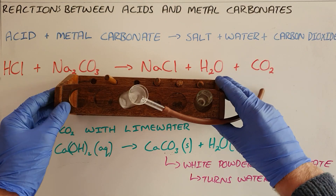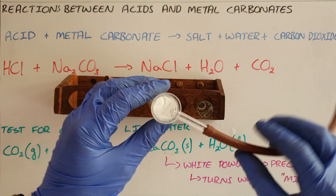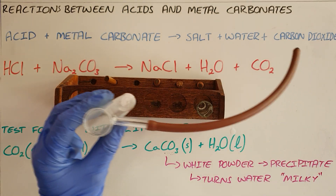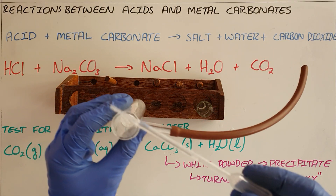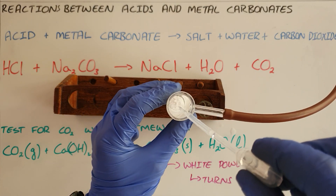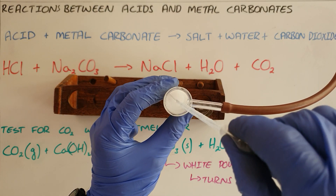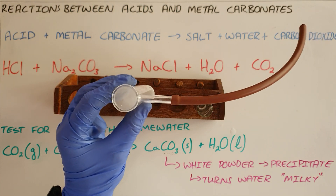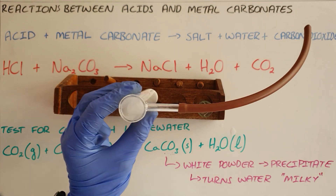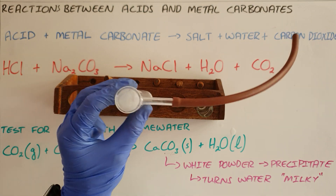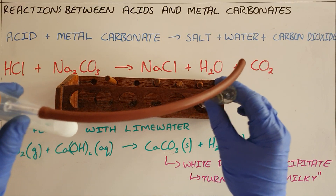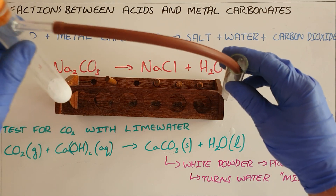Here we have our setup. We have our sodium carbonate in this test tube. I am going to start by adding the acid to this test tube. We can see that a reaction starts immediately. We perform the lime water test by putting a stopper onto this test tube, which forces the carbon dioxide out.